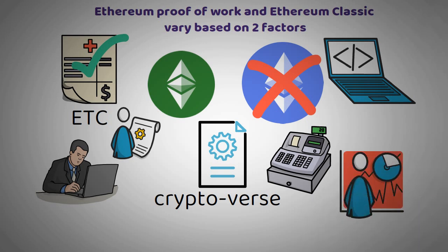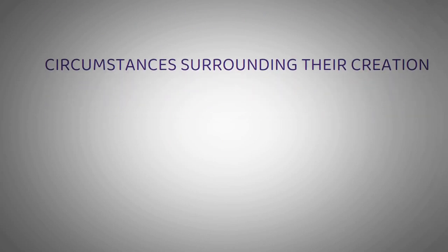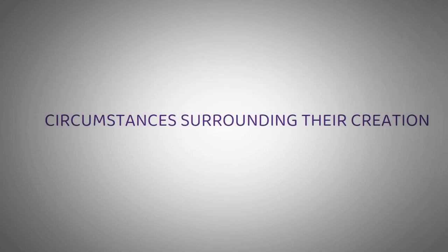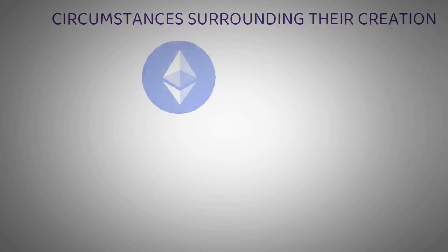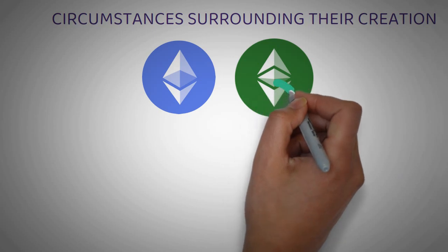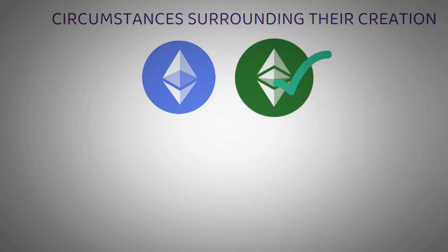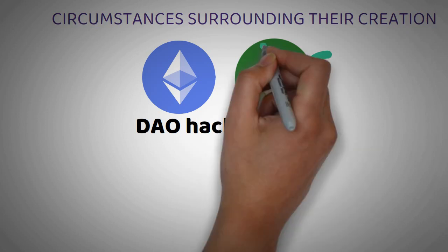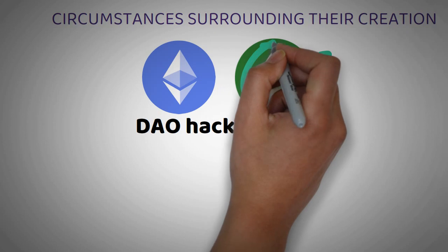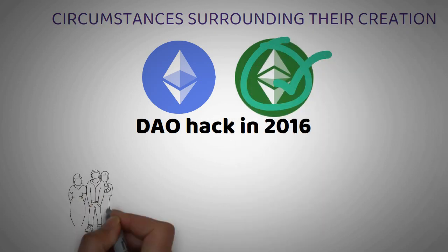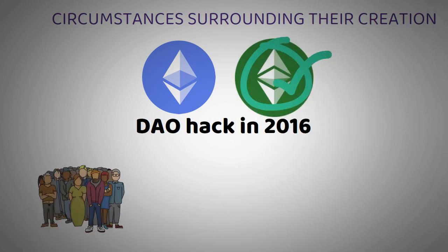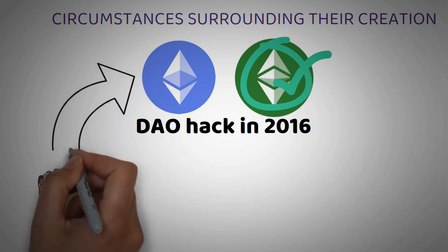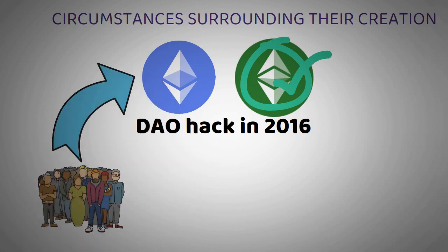The second difference between Ethereum Classic and ETHW is the circumstances surrounding their creation. This is important because it has affected the adoption of both cryptocurrencies. Ethereum Classic is the original Ethereum blockchain from which mainstream Ethereum was formed. After a DAO hack in 2016, the Ethereum Foundation created Ethereum by forking Ethereum Classic. The main reason for this was to reverse the effects of the hack. But some people ensured Ethereum Classic remained to preserve the original vision of Ethereum, which is to create an immutable and truly decentralized blockchain.